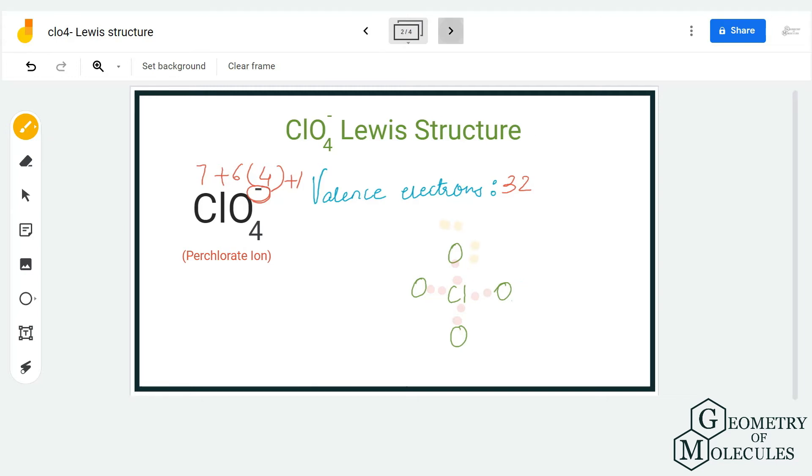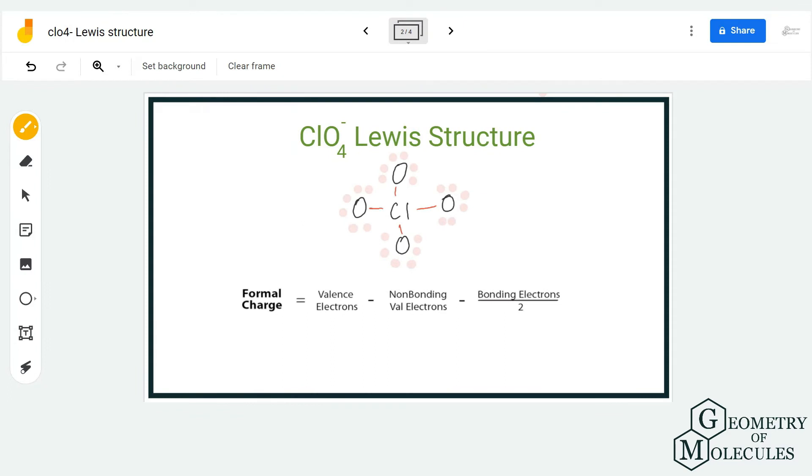So after arranging the remaining electrons around oxygen, we have used up 32 valence electrons. It might seem that this is a Lewis structure for perchlorate ion because every atom has eight valence electrons. But hold on—chlorine is a period three element and it can have expanded octets, which means it can accommodate more than eight valence electrons.